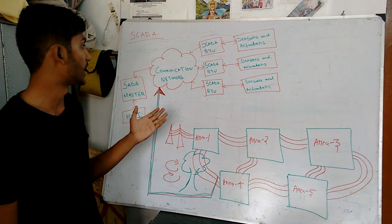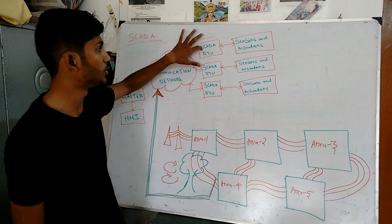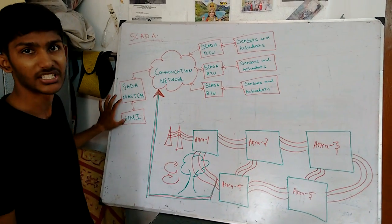This is a general block diagram of SCADA. This includes a communication network, SCADA RTU, sensors and actuators, SCADA master, and HMI.